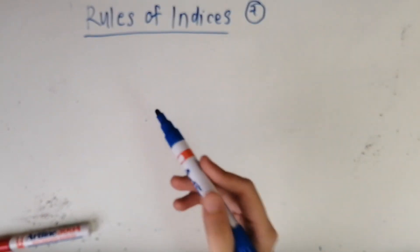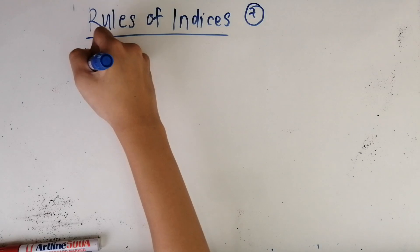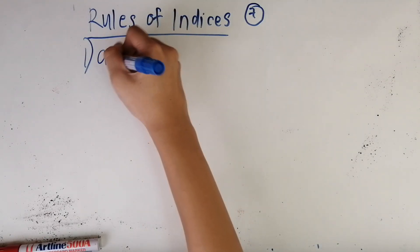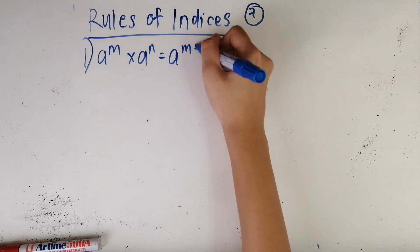To know how to do indices, you obviously need to know the rules of indices. That's what we're going over today. We have seven rules in total and the first one is a^m times a^n equals a^(m+n).